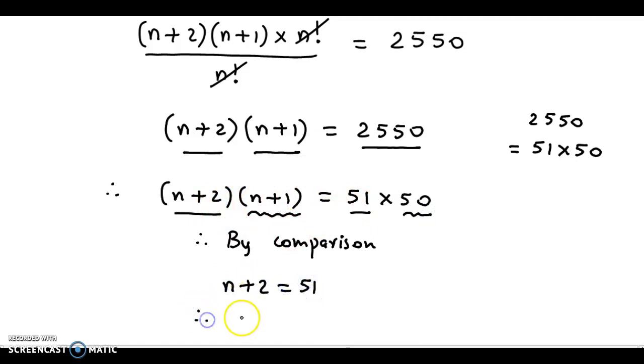So, from here, we obtain the value of n as 51 - 2. So, that is equal to 49. Now, we could also equate the second with the second factor. If n+1 = 50, again, we will get the same answer as n = 49.